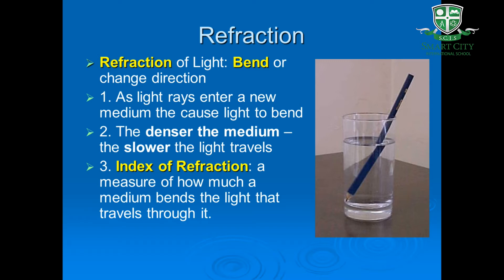As you know, light is an electromagnetic wave that can travel in both vacuum and a medium. It can travel through different states of matter — liquid, solid, or gas. But it has different speeds in every state of matter. It has the highest speed in vacuum, followed by gas, then liquid, then solid. So when light travels from one medium to another, it changes its speed and as a result it changes its direction. This is called refraction.